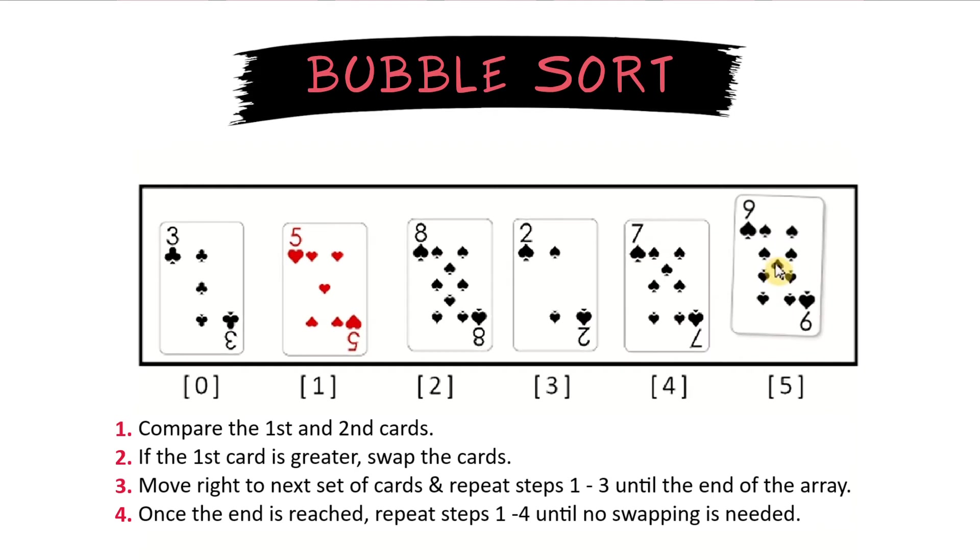Notice that 9 is the largest number. It has bubbled to the top of this array, and that is already sorted, and we do not need to move the 9 anymore.